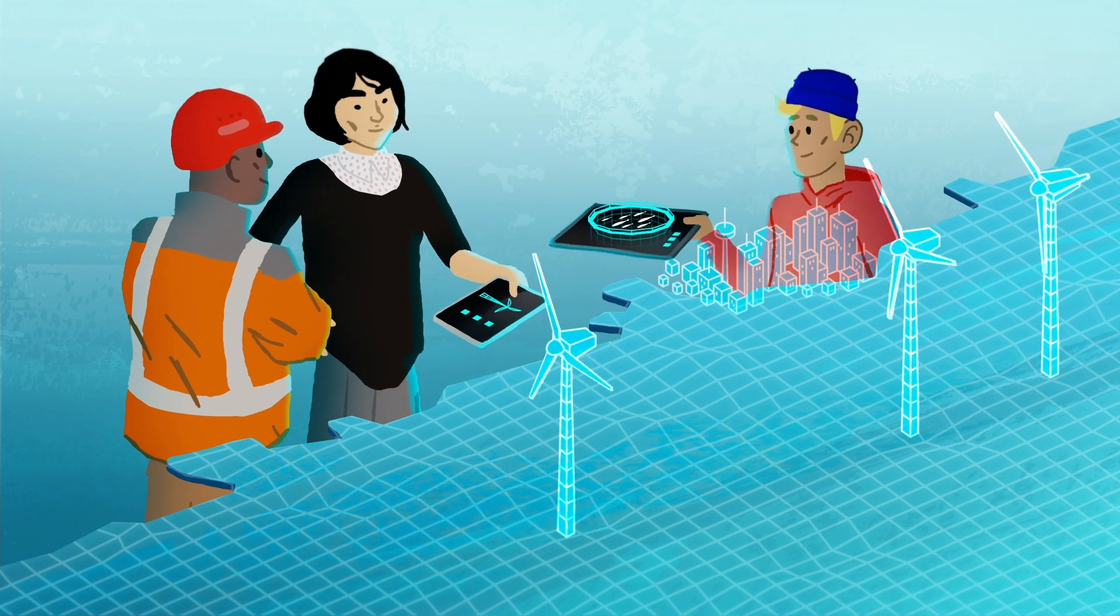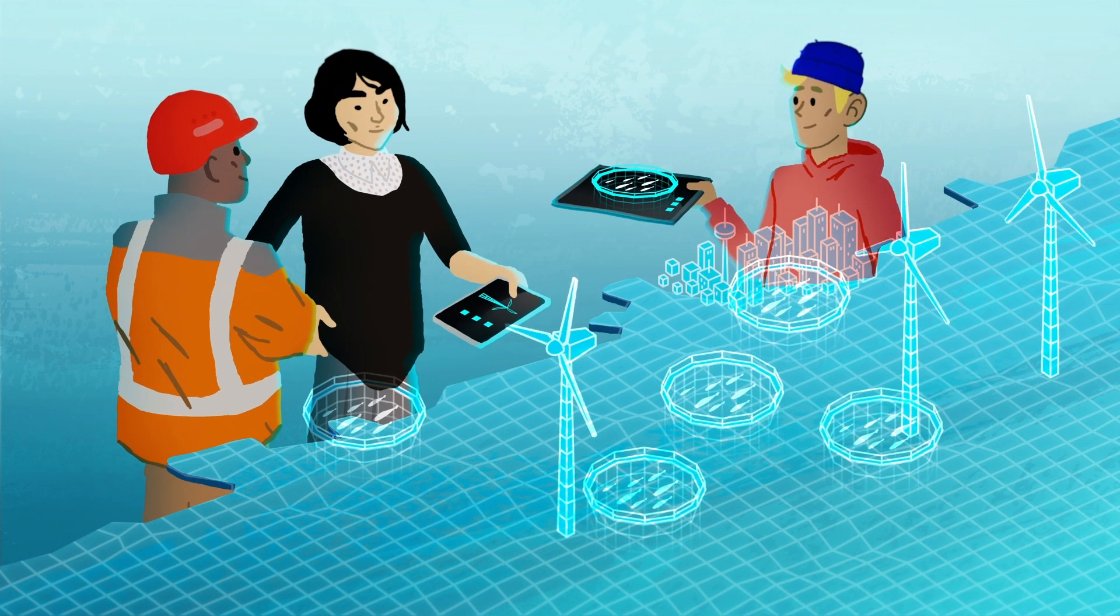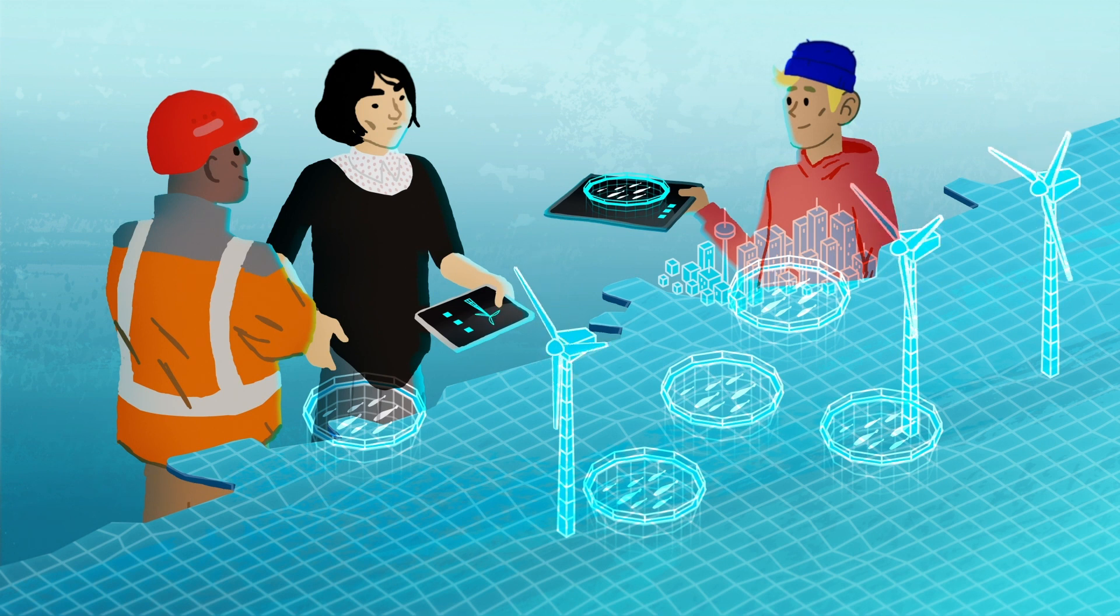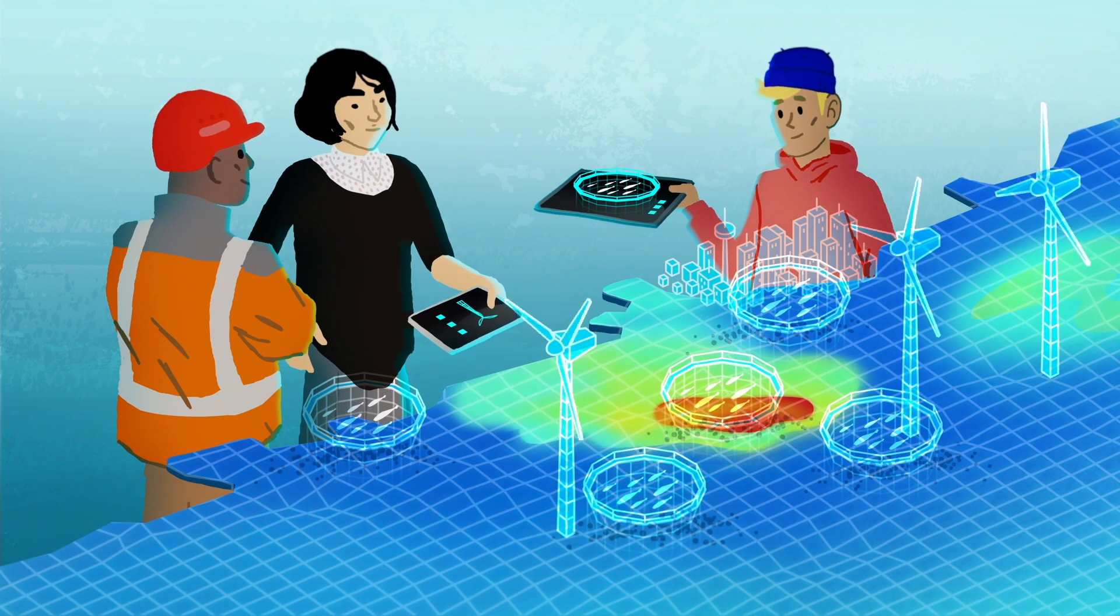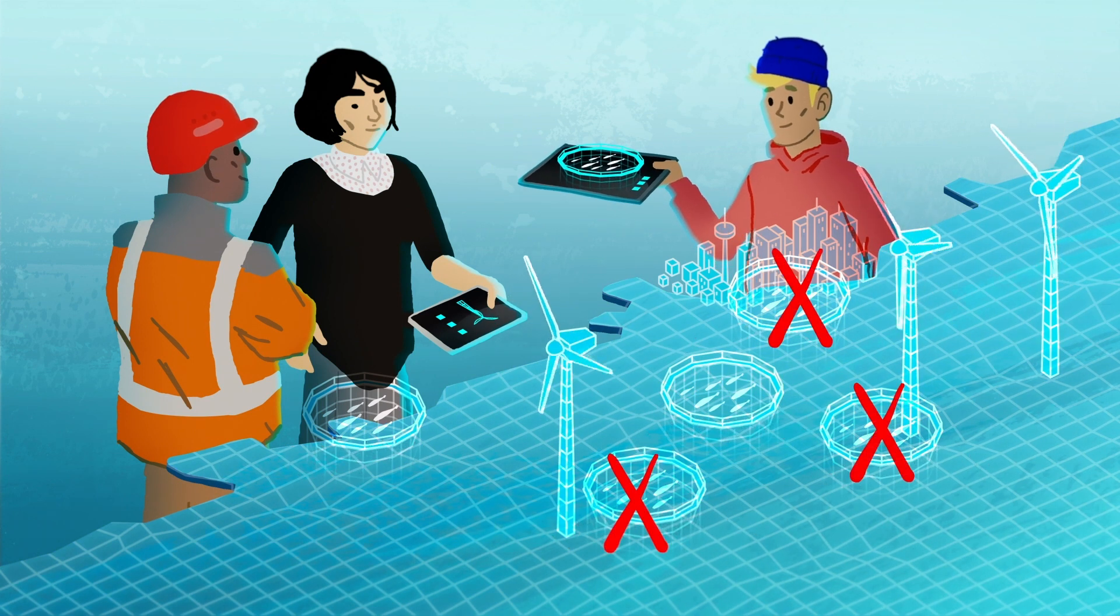Or when setting up new aquaculture sites, the Digital Twin Ocean can provide data on ocean currents, nutrient hotspots and fish farm waste to find the right location for their farms.